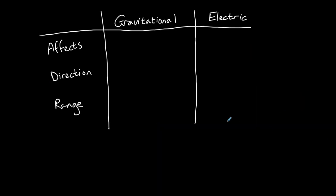Let's end with a quick comparison of gravitational and electric fields. Gravitational fields affect all particles with mass, whereas electric fields affect all particles with charge. Gravitational fields are always attractive. Gravitational repulsion is not possible.